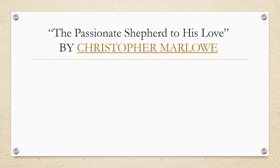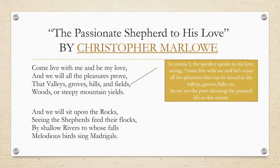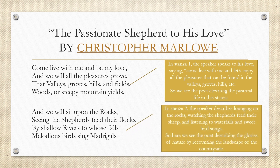Let's now take a look at the first two stanzas of The Passionate Shepherd to His Love — a traditional pastoral poem — and identify which characteristics of pastoral poetry can be found in these two stanzas. 'Come live with me and be my love, and we will all the pleasures prove that valleys, groves, hills, and fields, woods, or steepy mountain yields. And we will sit upon the rocks, seeing the shepherds feed their flocks, by shallow rivers to whose falls melodious birds sing madrigals.' In stanza one, the speaker invites his love to enjoy all the pleasures found in nature, elevating the pastoral life. In stanza two, we see the speaker describing lounging on the rocks, watching the shepherds feed their sheep, and listening to the waterfalls and sweet bird songs — the characteristic of describing the glories of nature and the landscape of the countryside.